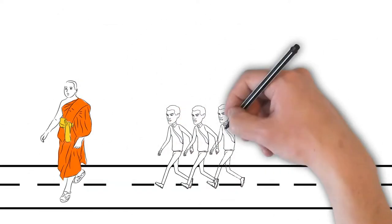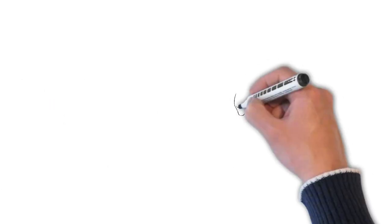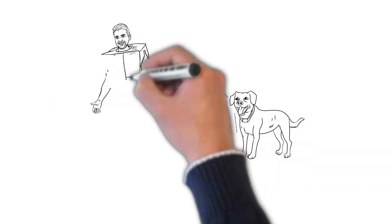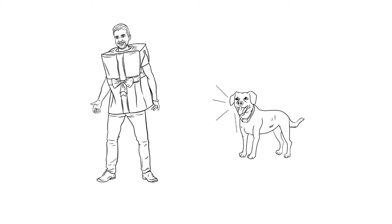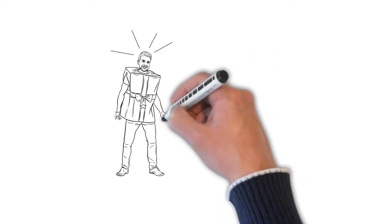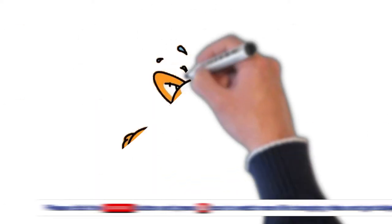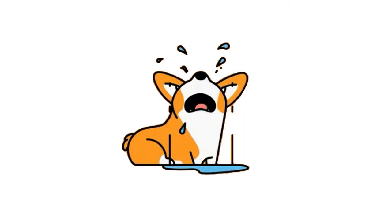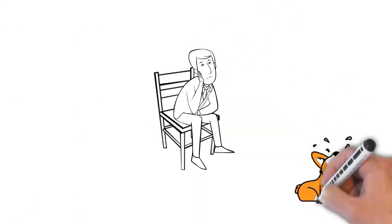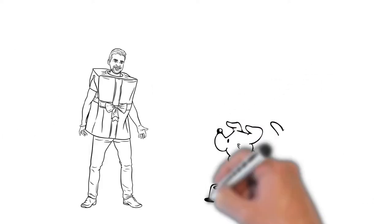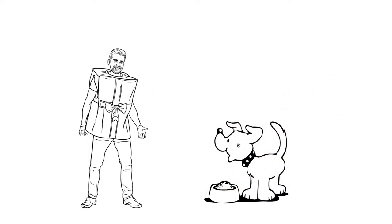Once he was passing through a street with his disciples when he noticed that a dog was following and barking at a man who was dressed in funny clothes. The man got irritated and with a stick started beating the dog which ran away crying in pain. The man felt bad soon after. He then offered the dog a packet of food. The dog immediately came to him and started eating the food joyfully.